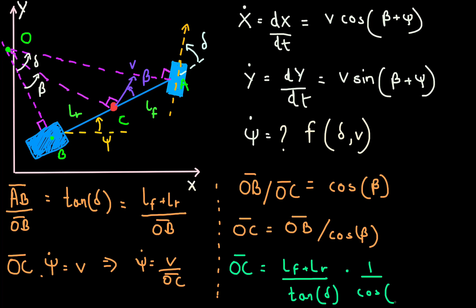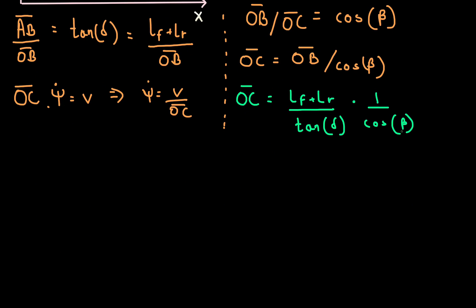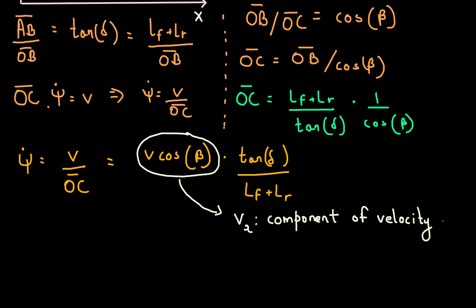Plugging this into the expression for psi dot, we get that psi dot is v into cosine of beta times tan of delta divided by the wheelbase, which is LF plus LR. And if we look closer, we can see that the v cosine beta term is just the component of velocity along the bicycle's longitudinal axis. That is along the length of the bicycle.